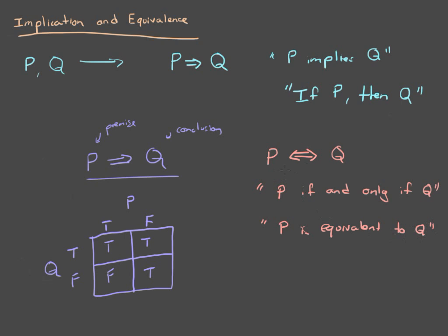All this means is that P implies Q and Q implies P. In other words, P and Q always have the same truth value — if P then Q, and if Q then P. Either they're both always true or they're both always false. I'll leave it as an exercise to draw out the truth table for that, and it shouldn't be too difficult. And that's implication and equivalence. Thank you.